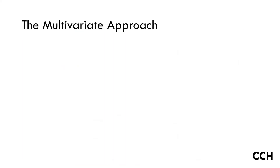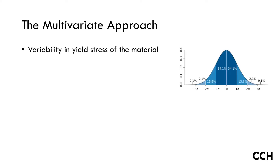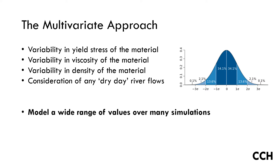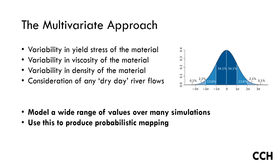It is best, if possible, to undertake a multivariate approach. For dry day failures, the yield stress, viscosity, and density of the released tailings should be varied over a parameter domain space within ranges of expected values. Additionally, if there is a risk of interacting with a large watercourse, mixing of the tailings should be considered since the river water may further mobilize the debris flow. This should be done over a large number of simulations, and the result can then be mapped both in terms of depth, velocity, etc., but also as probability.